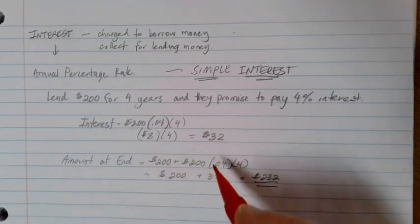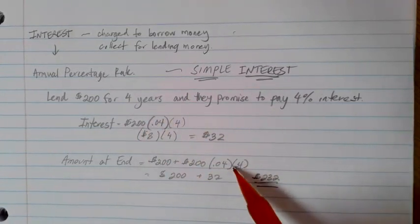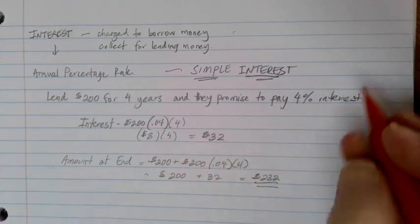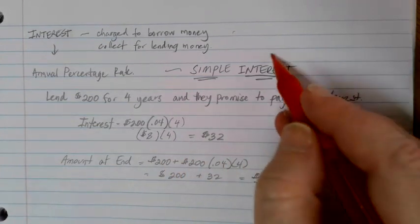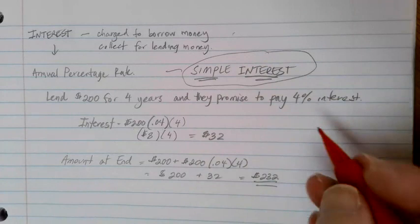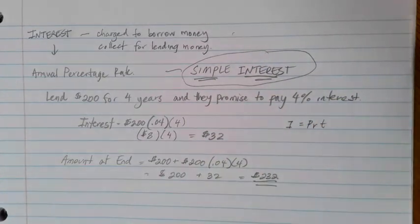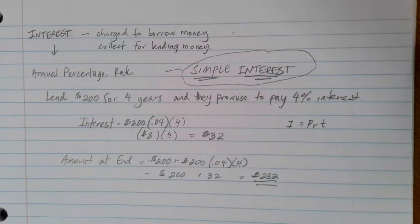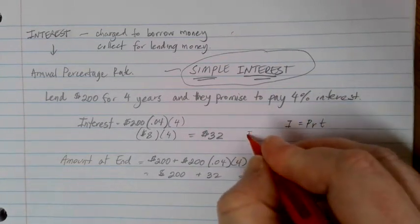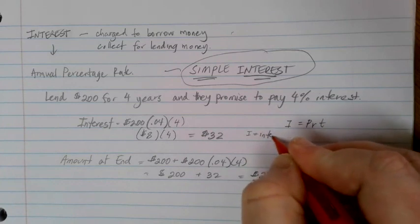These simple concepts here in terms of how our percentages work together to calculate the interest can be given by our simple interest finance formulas. The first one for interest, the way that we usually write this is I equals PRT. As we go through, I would be the amount of interest that's either earned or charged.